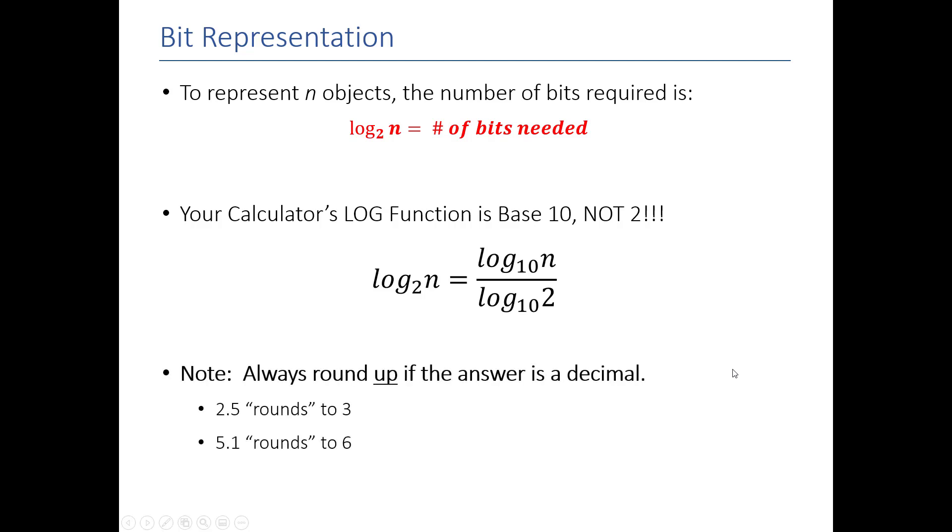The important thing to remember when you do it on the calculator is that you have to just round up, always. So, 2.5 rounds up to 3, and then 5.1 actually rounds up to 6.